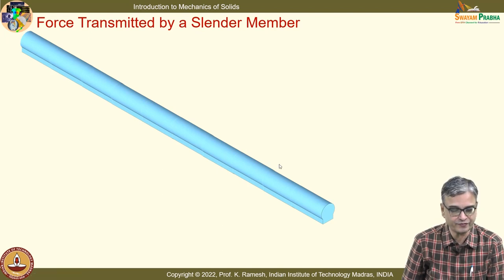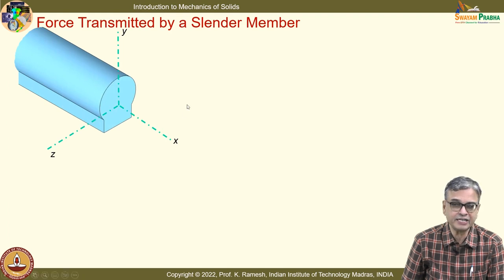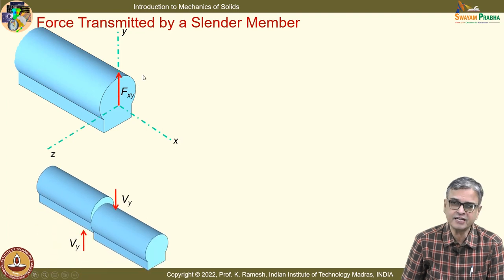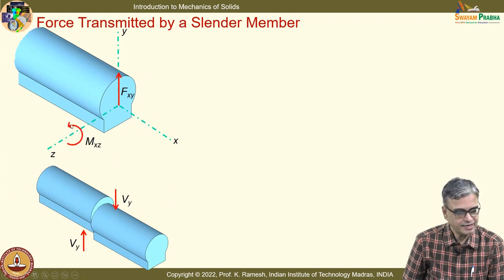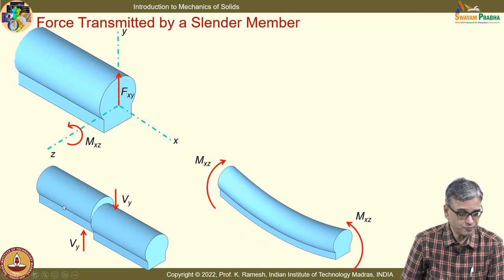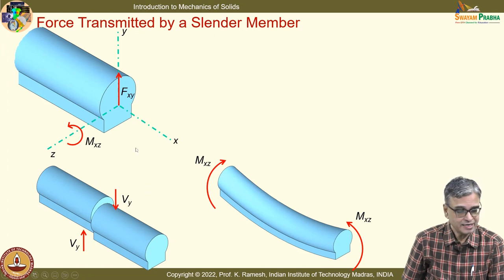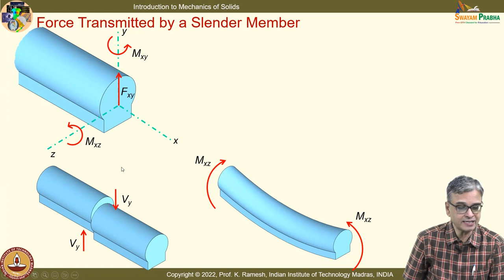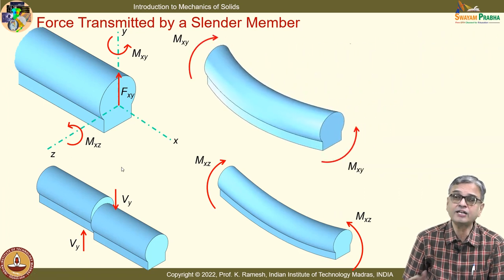You should never lose track of that. A slender member in general can transmit three forces and three moments. If you have a force like this, you call that a shear force. If you have a moment like this, you call this a bending moment. The kind of distribution and magnitude of shear force, bending moment, and bending moment in the other plane — all that you get from your course on rigid body mechanics.